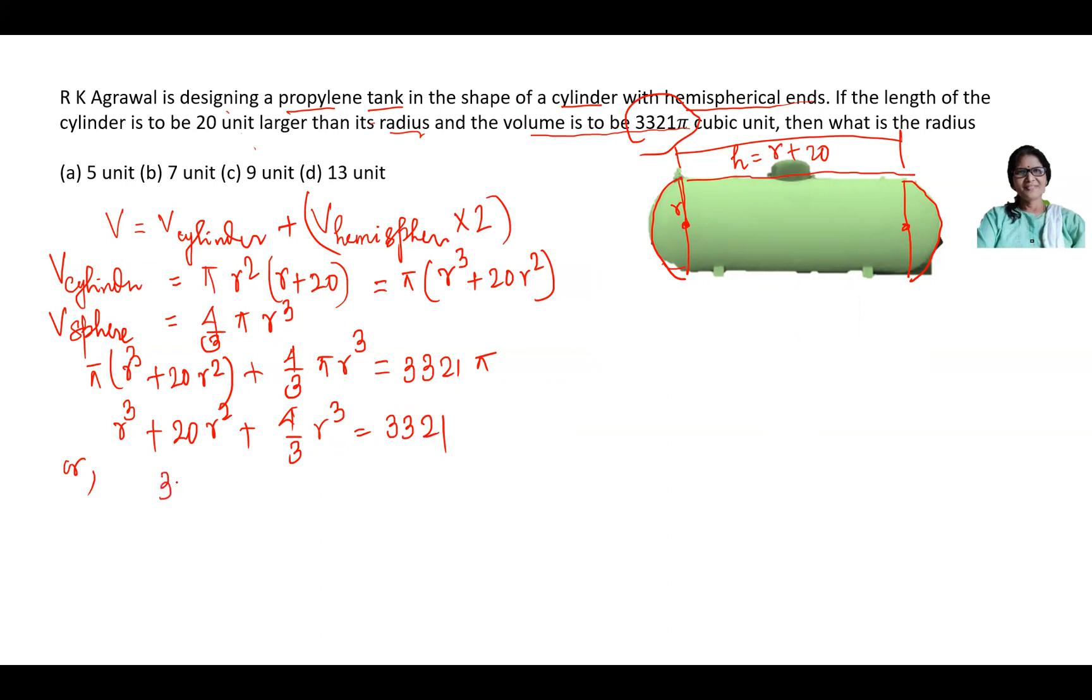Multiplying through by 3 and simplifying, the equation is now 7r³ plus 60r² equals 9963, or 7r³ plus 60r² minus 9963 equals 0.